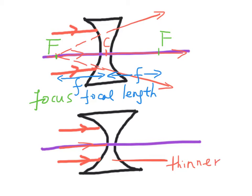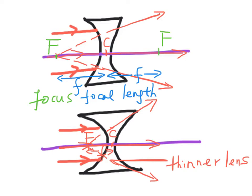For a thinner concave lens, the parallel light rays will refract to a greater extent. Therefore, the focus will be closer to the lens, and the focal length is shorter. As a result, a thinner lens has a shorter focal length.